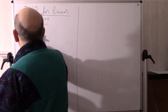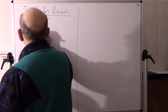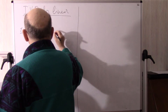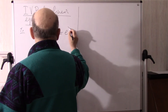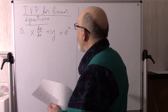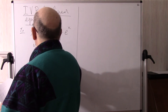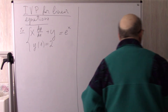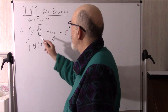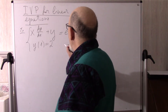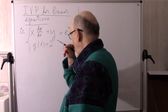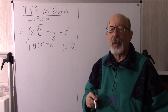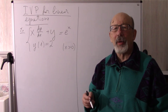First example: x dy/dx plus y equals e to the power x. There is the equation, and y at the point 1 equals 2 — this is the initial condition. Now we are solving this equation. Because here is a factor x, we solve it for x positive.